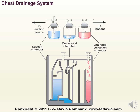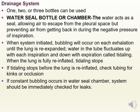The chest drainage system includes a drainage collection chamber, a suction chamber, and a water seal chamber. The system may have one, two, or three bottles. The water seal chamber acts as a seal, allowing air to escape from the pleural space but preventing it from returning during the negative pressure of inspiration. When the system is first initiated, bubbling occurs with each exhalation until the lungs are re-expanded. Water in the tube will fluctuate — or tidaling — up and down with each inspiration and expiration. When the lung is fully re-inflated, the tidaling stops. If tidaling stops before the lung is re-inflated, check tubing for kinks or occlusions. If constant bubbling occurs, check the system for leaks.